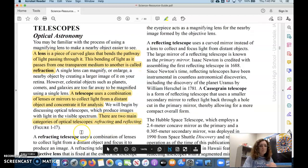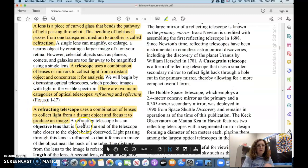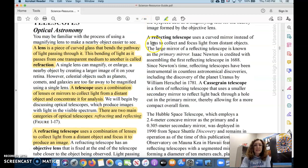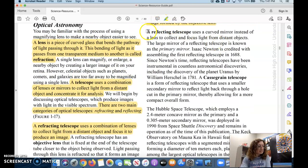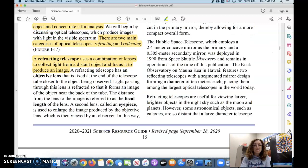A refracting telescope uses lenses, okay? The eyepiece acts as a magnifying lens for the nearby image formed by the objective lens. And then the other kind is a reflecting telescope. This uses mirrors instead of a lens to collect and focus that light.